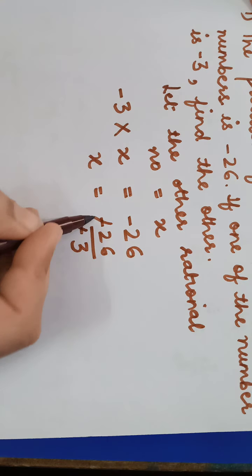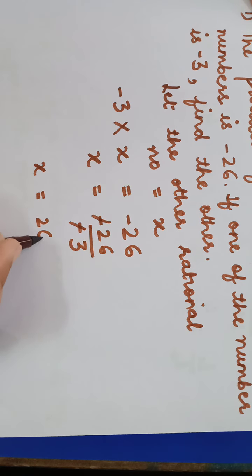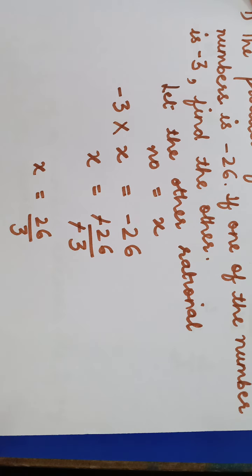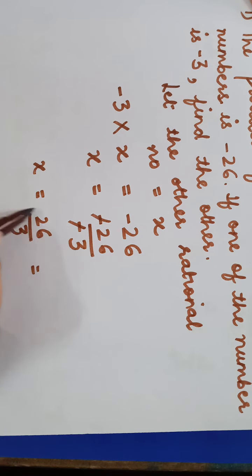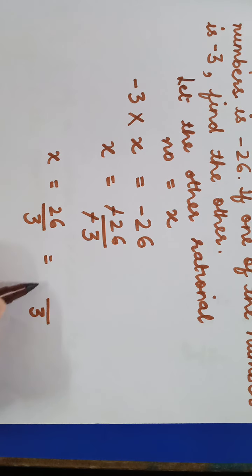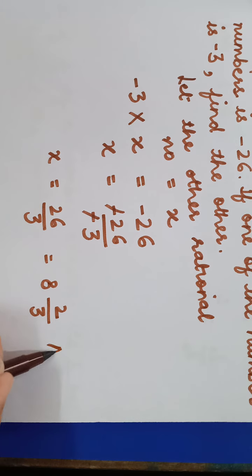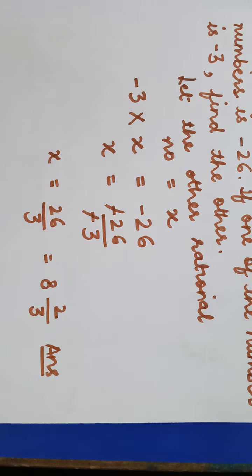The two negatives cancel, so we get x equal to 26 upon 3. This is an improper fraction, which we can convert into a mixed fraction: 3 eights are 24, remainder 2, giving us 8 and 2 upon 3 as the mixed fraction answer.